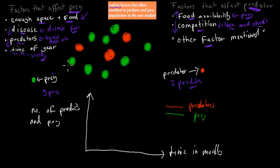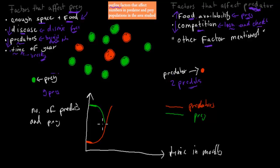Initially, prey numbers might be really high and predator numbers really low. Then predators start eating the prey and their numbers increase, while prey numbers go down. Predator numbers continue to rise while they have enough food, but once they've risen so high that prey numbers have crashed, predators start to die of starvation and their numbers drop. As predator numbers fall, prey numbers go back up.